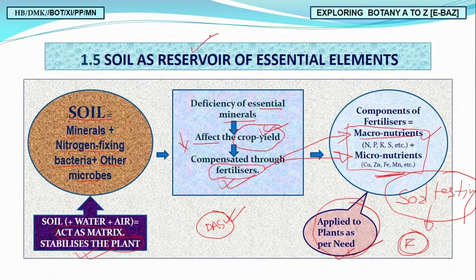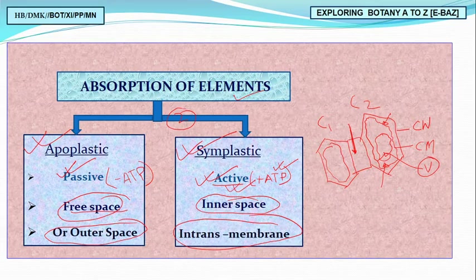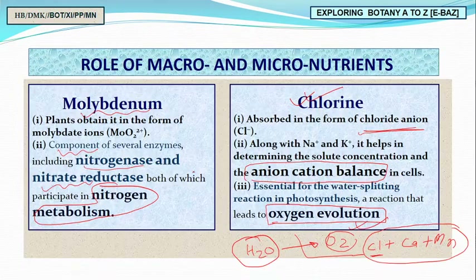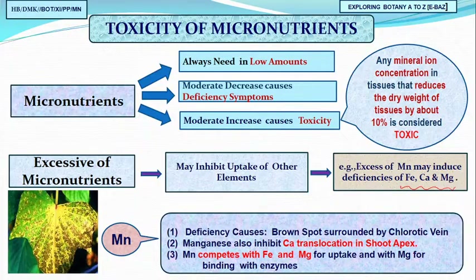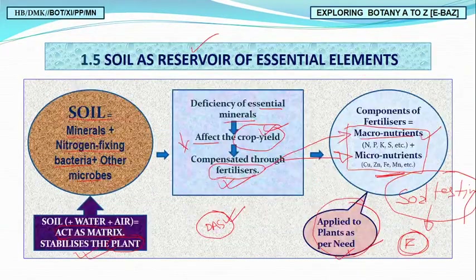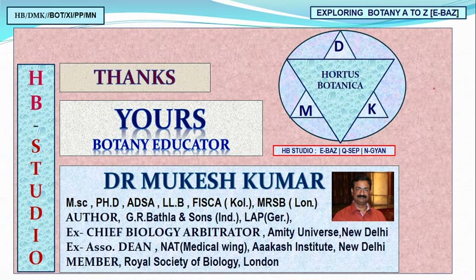Today in lecture two, we covered: soil as a reservoir of essential elements and how it provides nutrients; translocation of solutes upward through xylem in ascending water stream; active (symplastic) and passive (apoplastic) pathways; influx and efflux movements; roles of macro and micronutrients; and toxicity of micronutrients. Go through your NCERT, and once you do, you'll find everything well-learned through these HB Botanical classes. Thank you very much — please give your comments and suggestions.